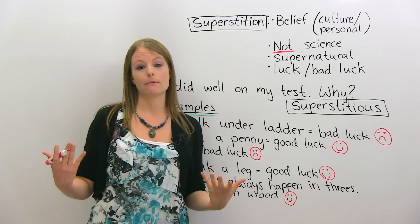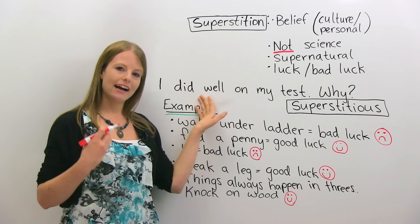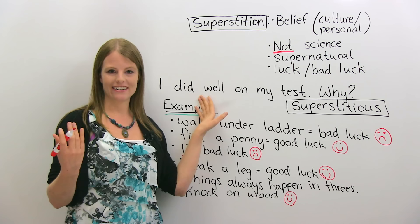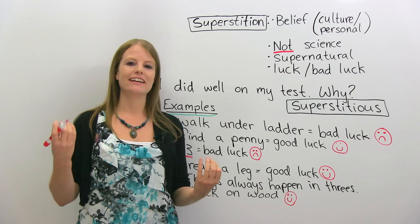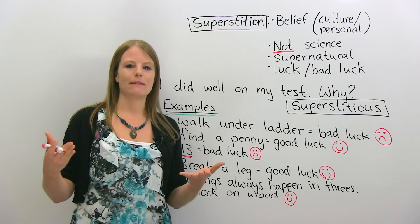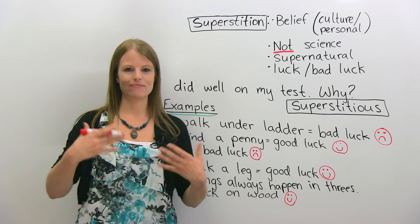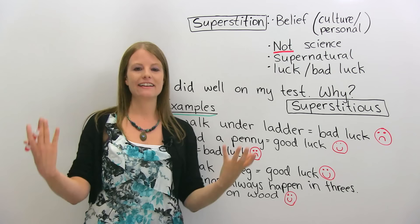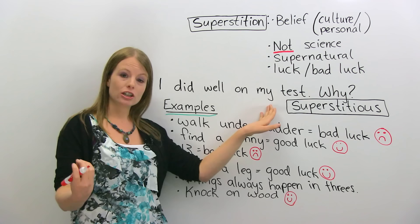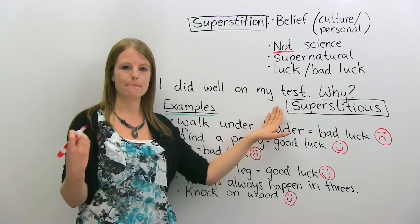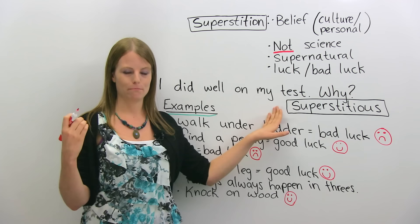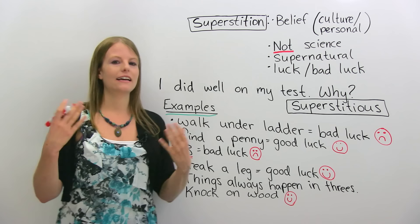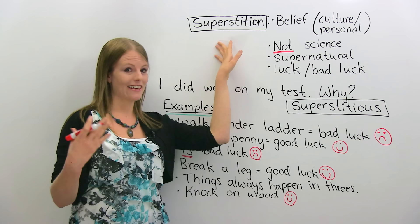For example, I did great on my test because I brought a lucky pen, because it was at 7pm and seven is a lucky number, and I wore green which is a lucky colour — so all these reasons helped me on my test. You would say I'm superstitious. Superstition is a cultural belief that explains something in the world, but not based in science. A person is superstitious — we use 'superstitious' to describe people. My mother is the most superstitious person I know. I grew up in a very superstitious household.